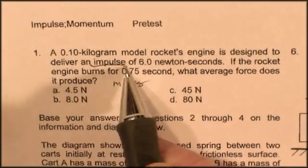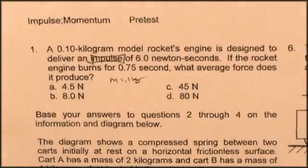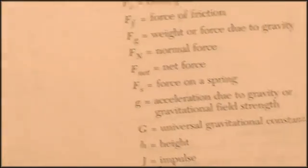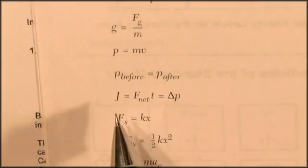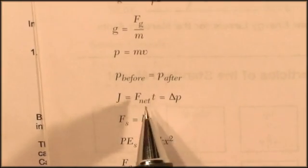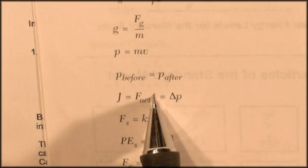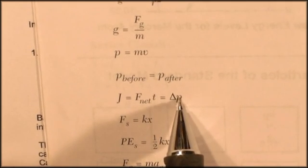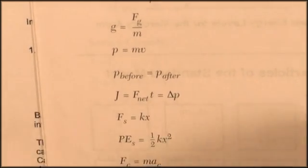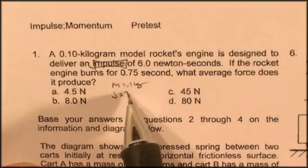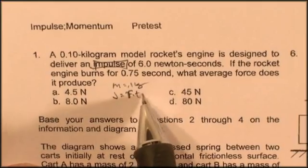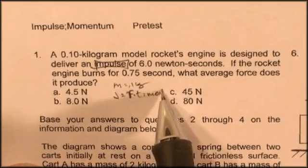Now impulse, interesting word, we use the letter J to represent impulse, and J is defined as a net force for a period of time, and it causes a change in P, which is momentum. Momentum is mass times velocity. So an impulse is a force times time, and it causes a mass to change velocity.